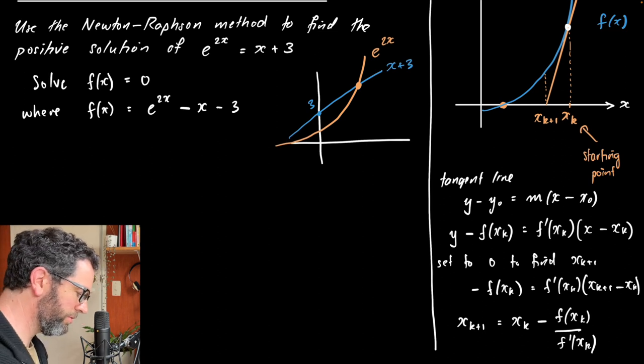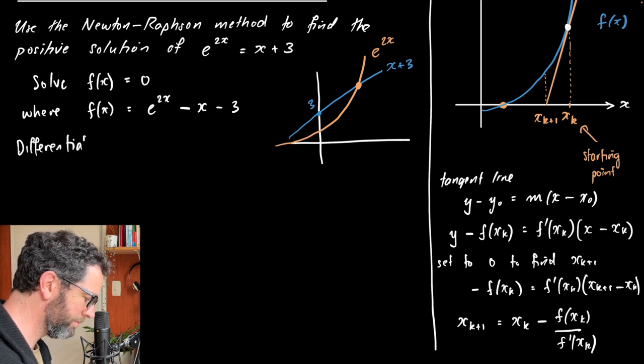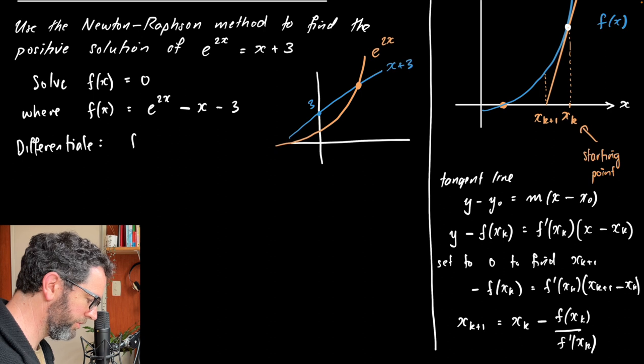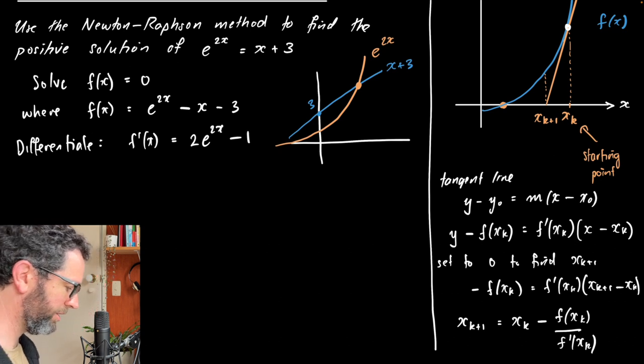All right, so we need to know the derivative of our function. So let's just calculate that. That will give us f prime of x is going to be, well, e to the 2x differentiates to itself, and then there's a factor 2 out the front from the chain rule, minus x, and the x differentiates to 1, and the negative 3 goes away to nothing.